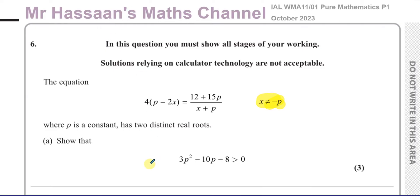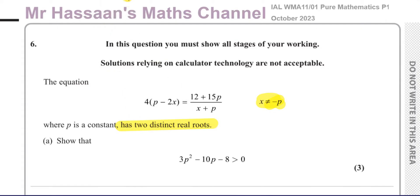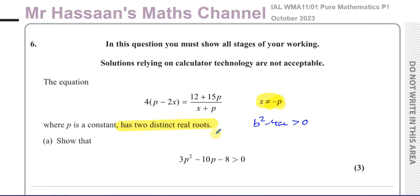The question states that p is a constant and the equation has two distinct real roots — show that this inequality is true. 'Two distinct real roots' should trigger in your mind that it's got something to do with the discriminant of a quadratic equation. When we rearrange this equation we should get a quadratic form, and for two distinct real roots the discriminant b² minus 4ac will have to be greater than zero.